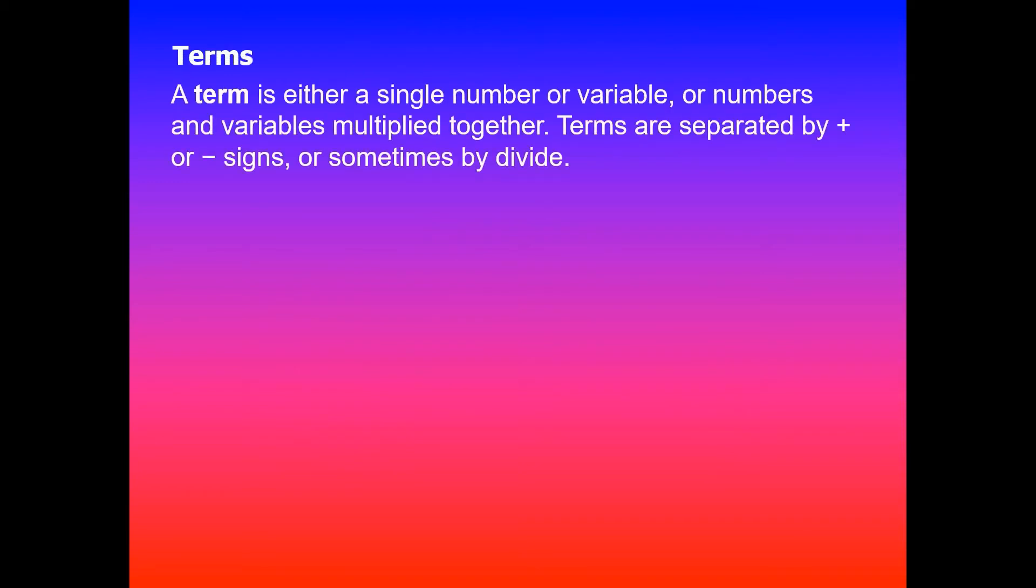Terms are either a single number or a variable or numbers and variables multiplied together and they're usually separated by plus or minus signs and in some cases using a division sign. For example, a plus 2 where a and 2 are the two terms for this expression. 3m plus 6n take away 6, so 3m, 6n, and take away 6 are the three terms in this expression.